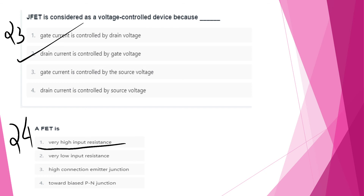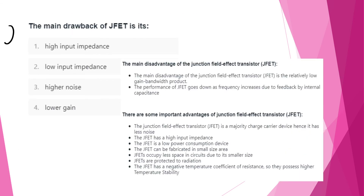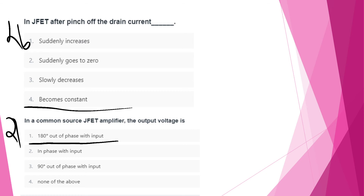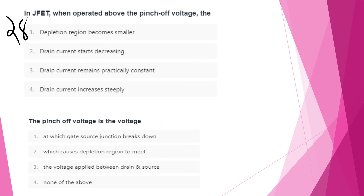FET is considered a high input resistance device. The main drawback of JFET is related to gain. After the pinch-off voltage, the drain current becomes constant. In a common source JFET amplifier, the output voltage is 180 degrees out of phase with the input. The JFET is operated above the pinch-off voltage.